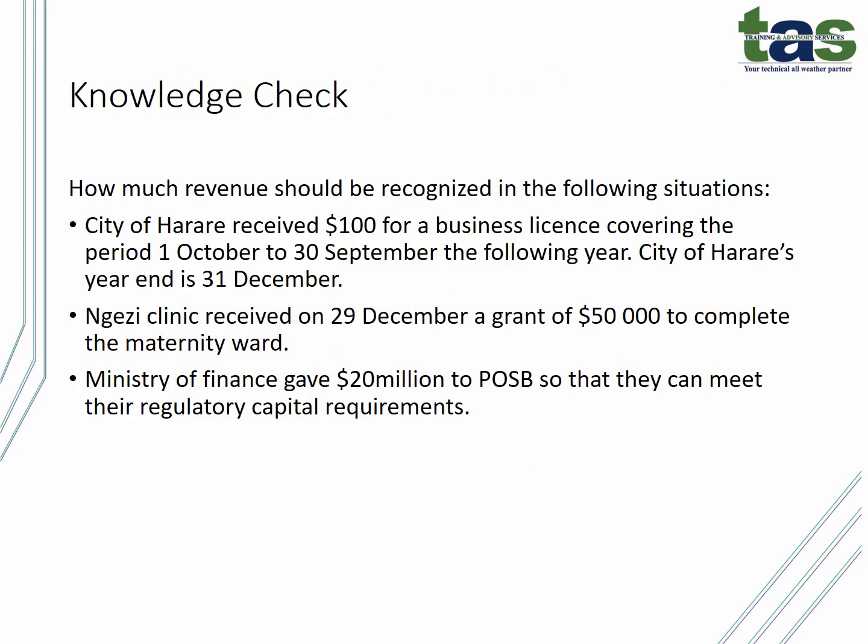Let's look at this example: how much revenue should be recognized in the following situations? The City of Ferrari receives one hundred dollars for a business license covering the period from 1 October to 30 September in the following year. The City of Ferrari's year-end is 31 December. How much revenue should be recognized? The full one hundred dollars should be recognized in the month in which it is received. There is no need to spread this revenue over a period, because the City of Ferrari is not providing a service — this is a form of tax effective from 1 October — and therefore the full revenue should be recognized.